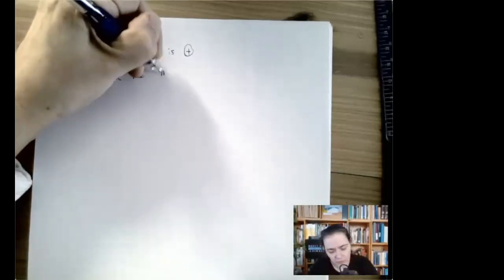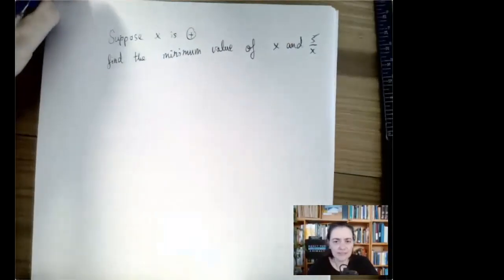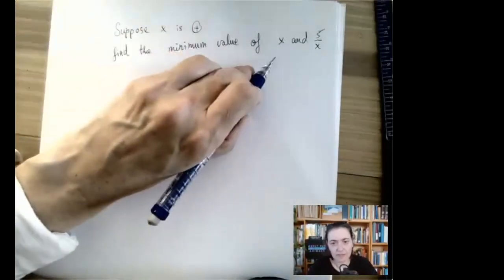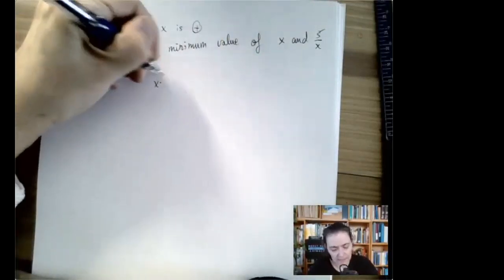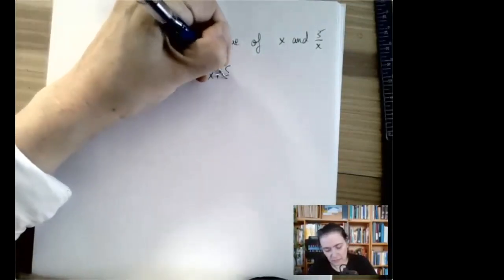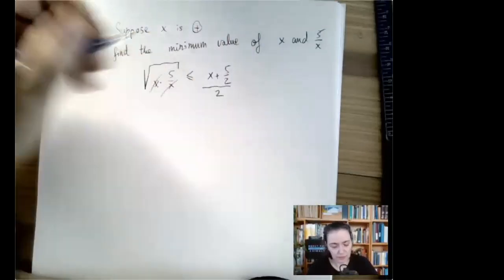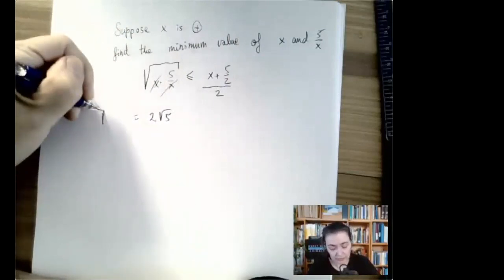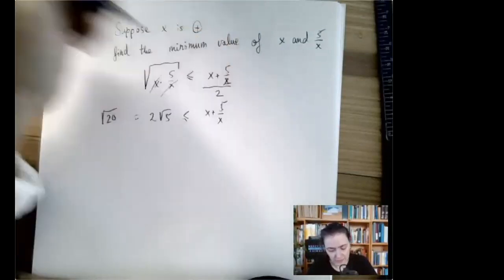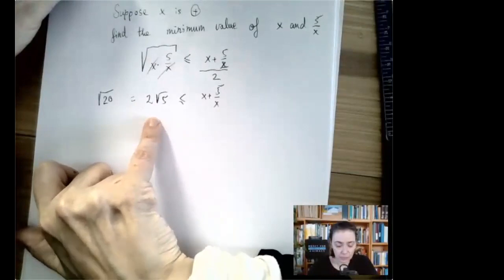For example, suppose x is positive and we want to find the minimum value of x + 5/x. We can apply the AM-GM theorem: the square root of x times (5/x) is less than or equal to (x + 5/x)/2. The x's cancel inside the square root, giving 2√5 ≤ x + 5/x. So no matter what x is, x + 5/x is always greater than or equal to 2√5, which is the minimum value.